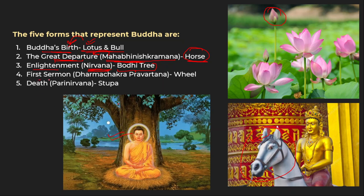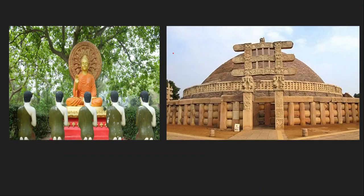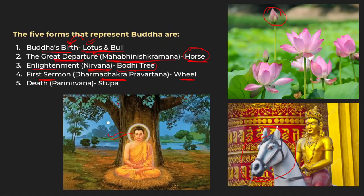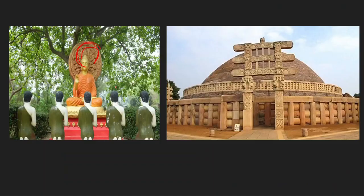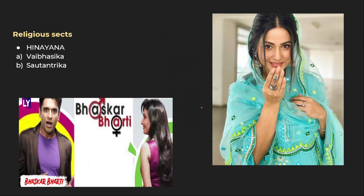The fourth point is the first sermon — Dharmachakra Pravartana. Chakra means wheel, and you can see this wheel in the picture — this symbolizes the first sermon of Lord Buddha. And finally, the fifth one is death — Parinirvana — which is symbolized by the Stupa. The ashes of Lord Buddha were kept here. So Stupa represents death. I hope you were easily able to recall and remember all five forms.